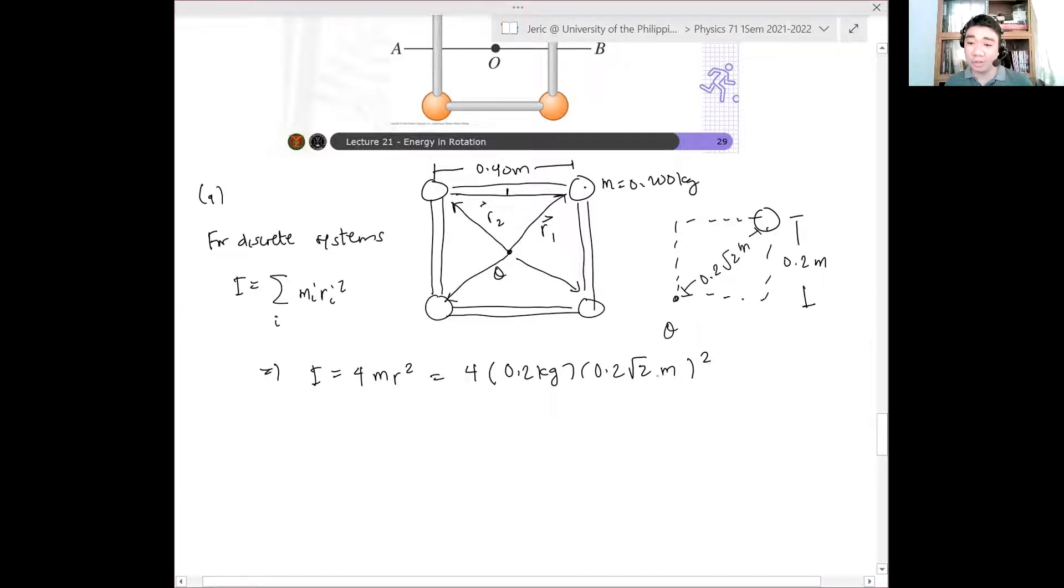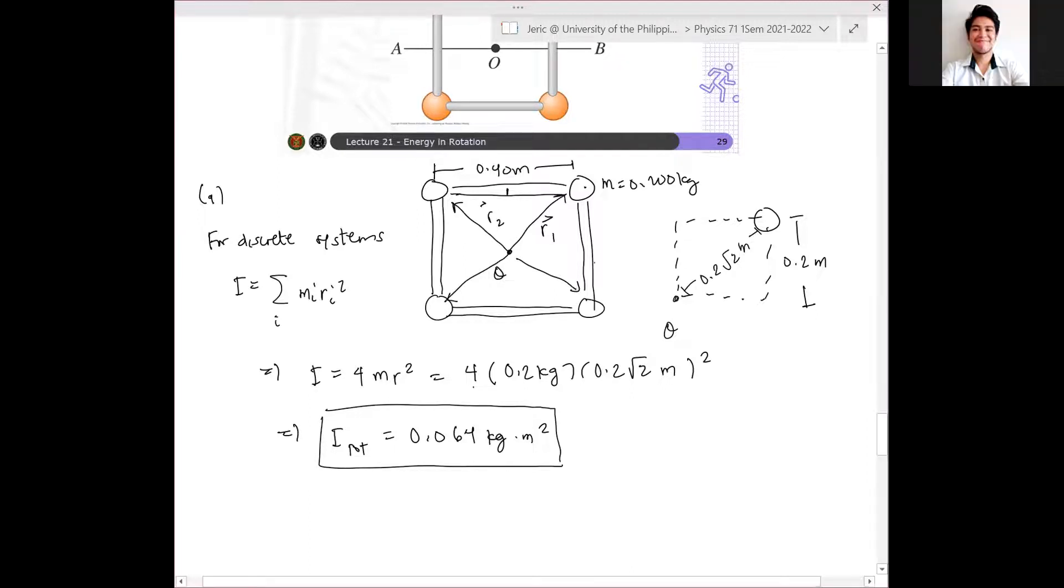And it turns out that when you solve this problem, ang lalabas sa kanya ay, I total is 0.064 kilogram meter squared. That is the total moment of inertia of the body. Questions? May tanong? Wala.